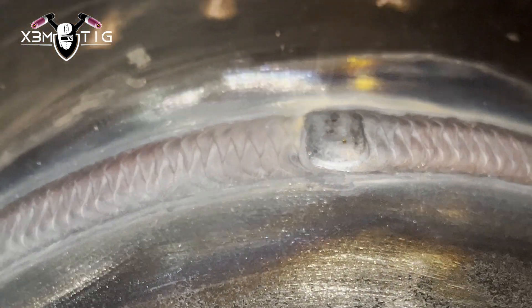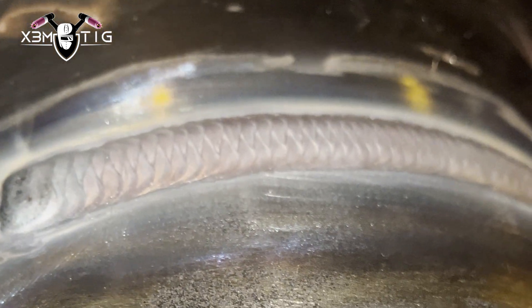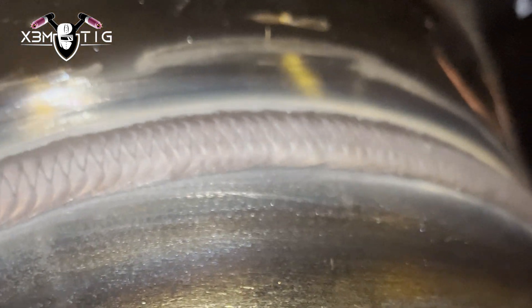The good thing about TIG as well is you can always see what's happening in your puddle. If you got any porosity, it will show you right away. That's it for the cap. This is one side, I'm gonna cap the other side and it's ready for x-ray.